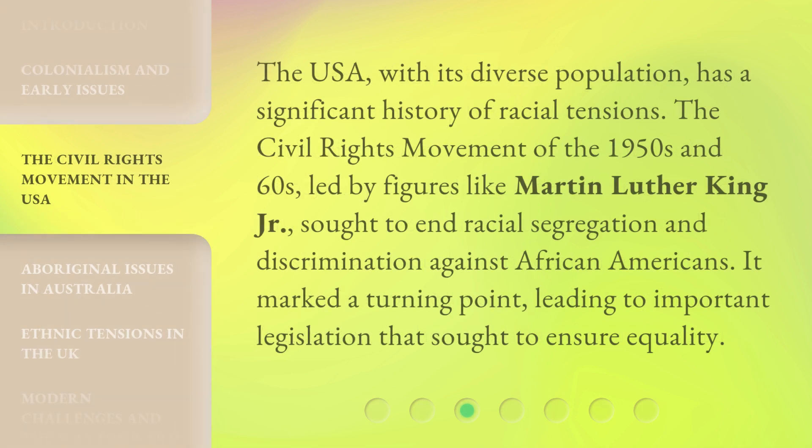The USA, with its diverse population, has a significant history of racial tensions. The civil rights movement of the 1950s and 60s, led by figures like Martin Luther King Jr., sought to end racial segregation and discrimination against African Americans. It marked a turning point, leading to important legislation that sought to ensure equality.